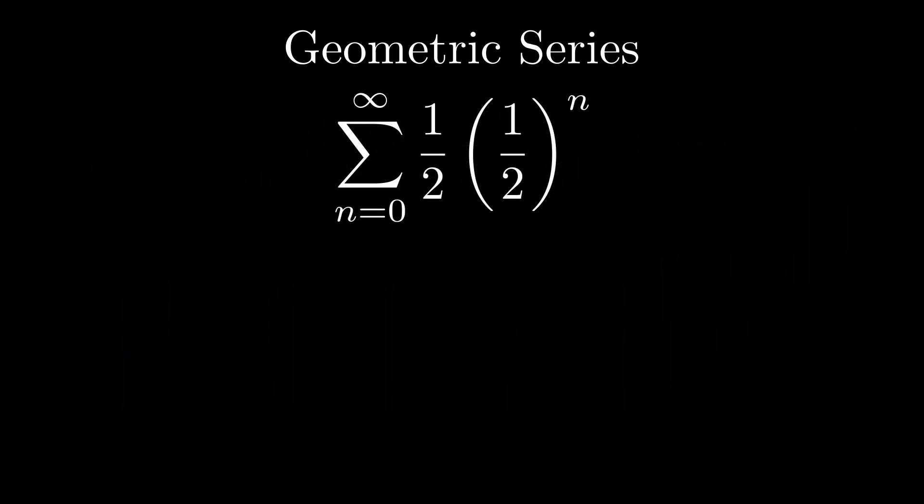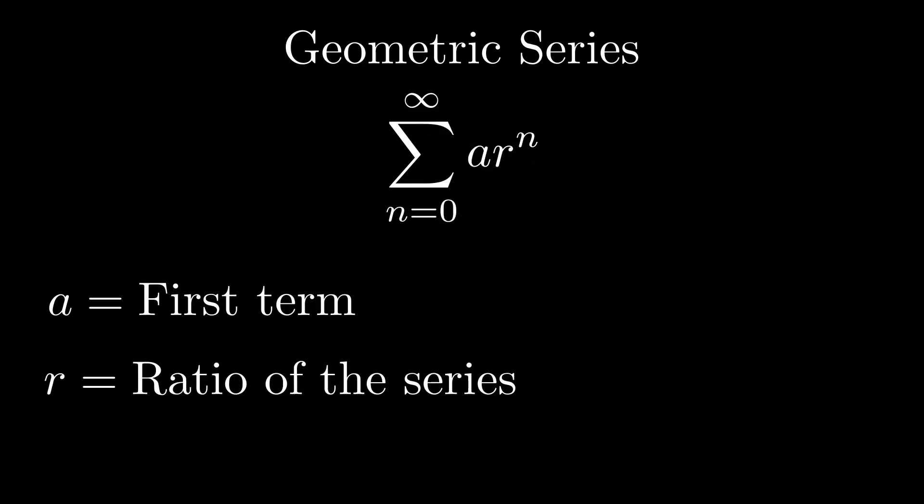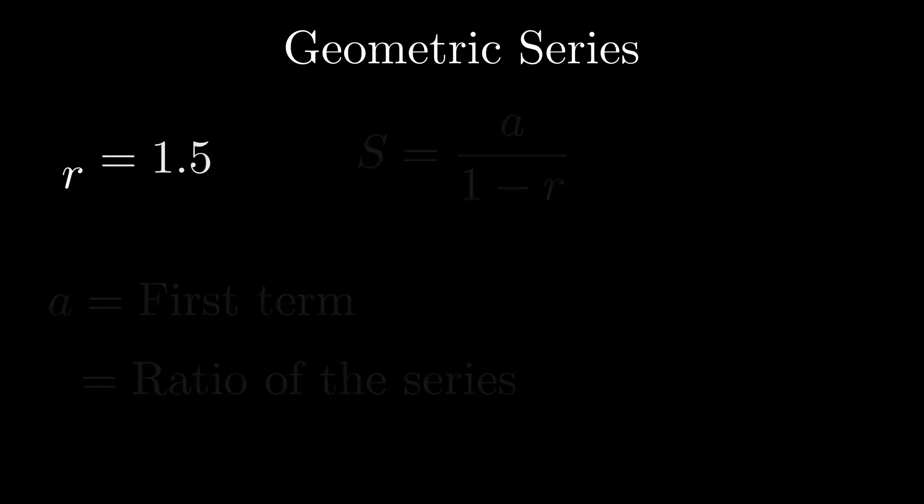This is a converging geometric series, and it looks like this in terms of a summation form. The general structure has an a, which is the first term, and an r, which is the common ratio. The sum can be found with this formula.